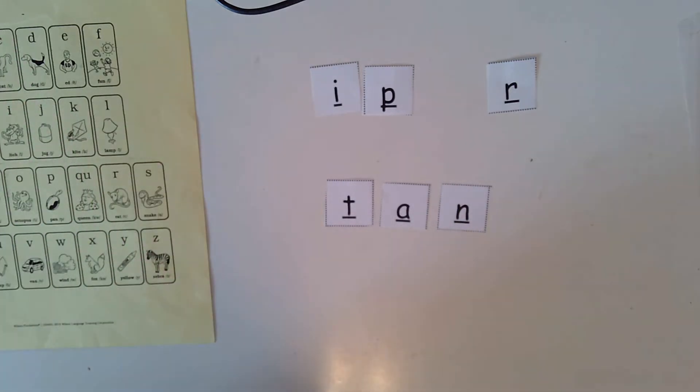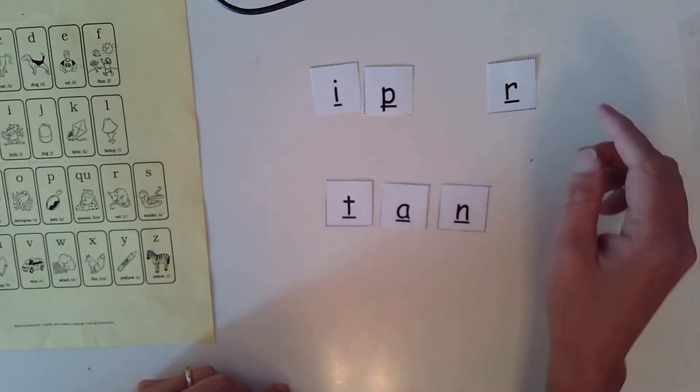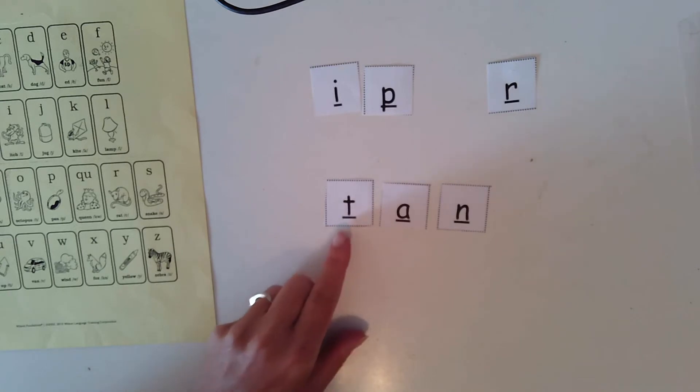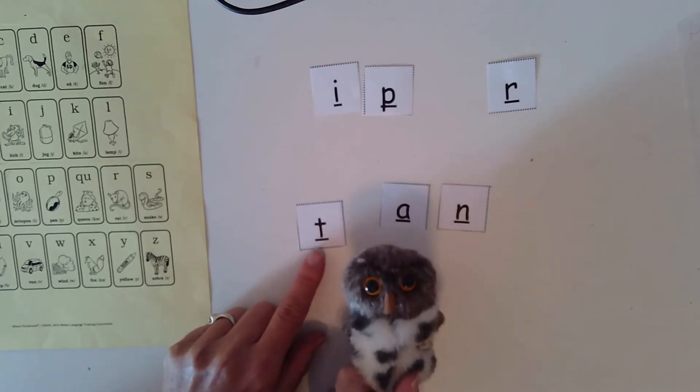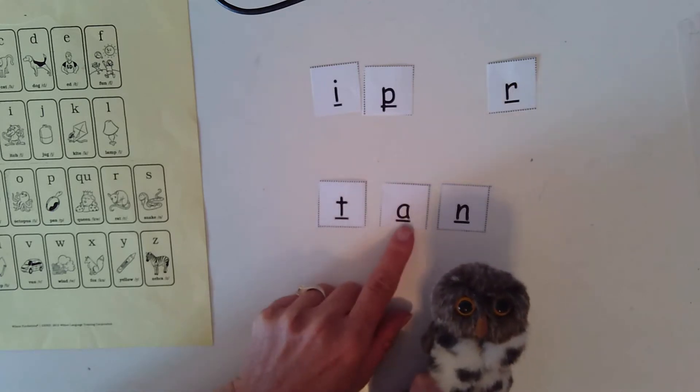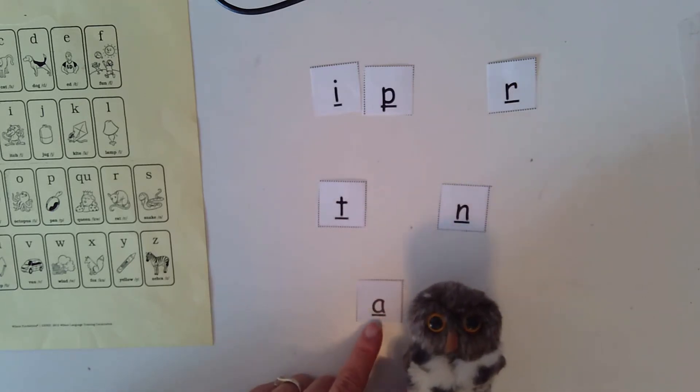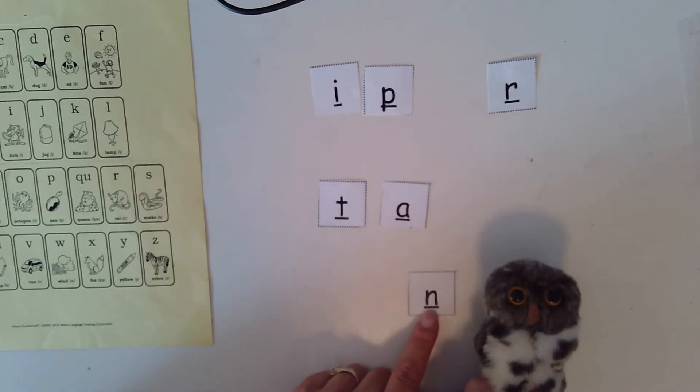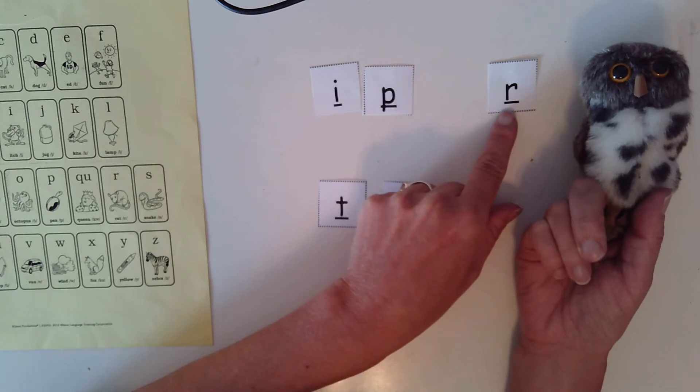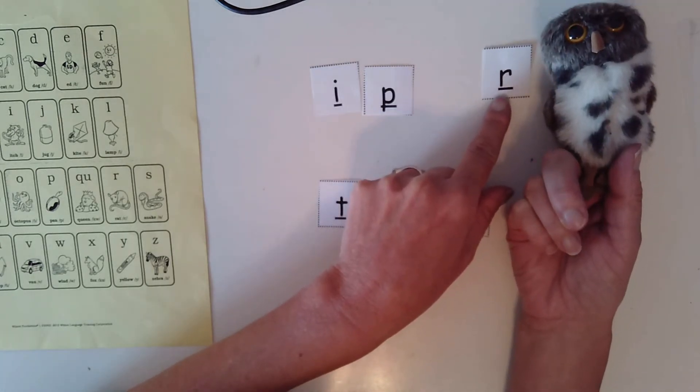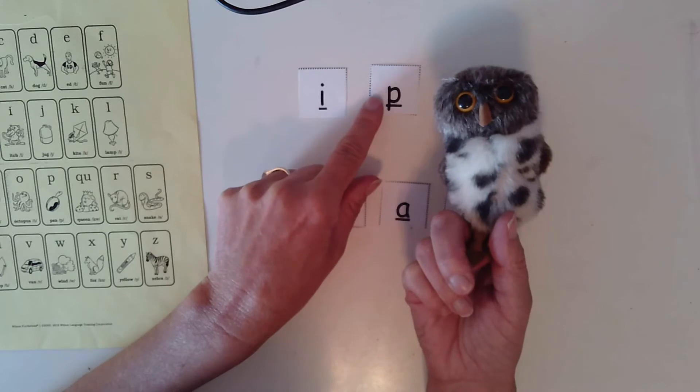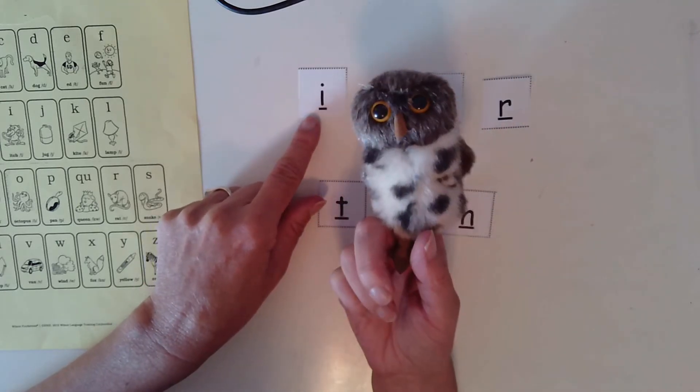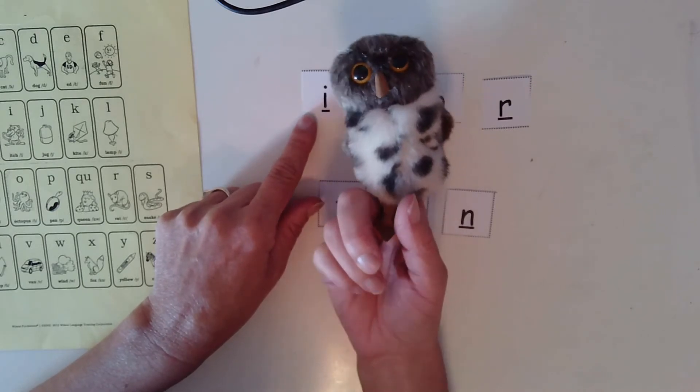Mrs. Stalkup forgot to review the letter sounds. Should we do that real quick with baby echo? So we have the word tan. What's tan begin with? T-top-t. Can you do that? T-top-t. Good job. A-apple-a. A-apple-a. N-nut-n. N-nut-n. R-rat-er. R-rat-er. P-pan-p. P-pan-p. And we have another vowel. I-itch-i. I-itch-i.